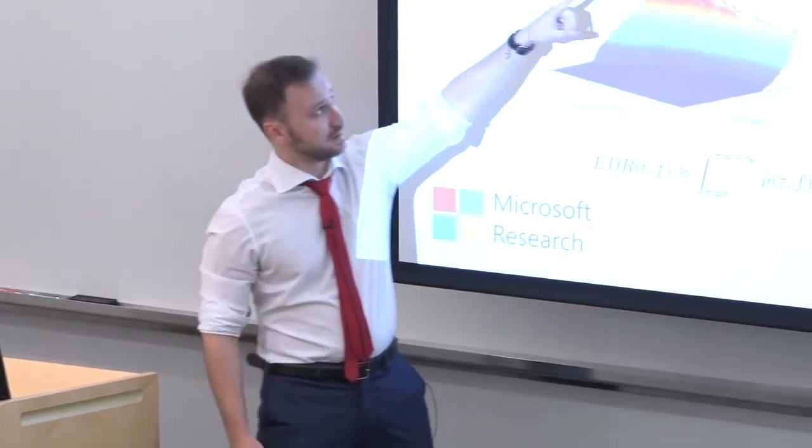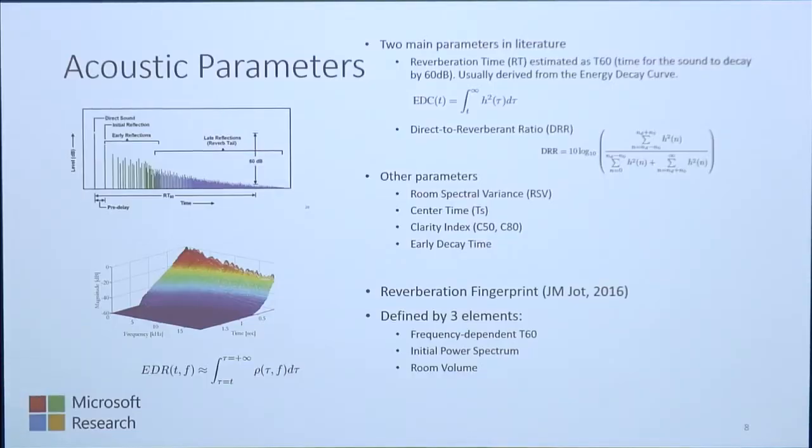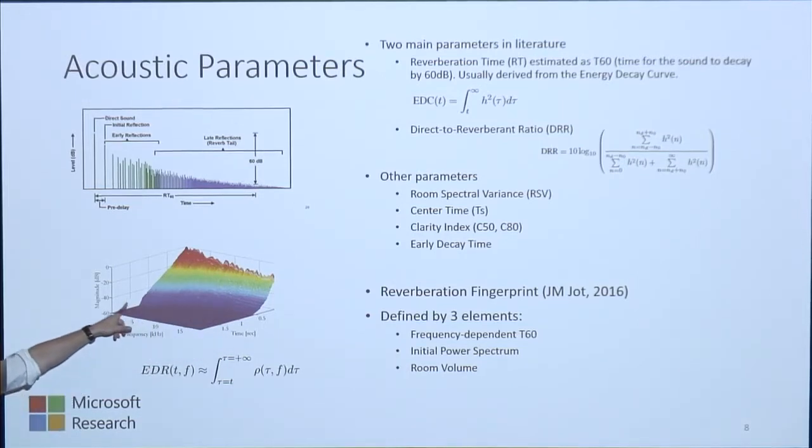There is quite a large body of literature about the blind prediction of T60 and DRR, while other parameters have not been covered as much. The T60 is basically the time it takes for an impulse response to decay by 60 dB. The DRR is the direct-to-reverberant ratio describing the ratio between the first part and the late part. More recently, literature has proposed a different descriptor — the reverberation fingerprint — which is a frequency-dependent T60 decay coupled with an initial power spectrum and the room volume.